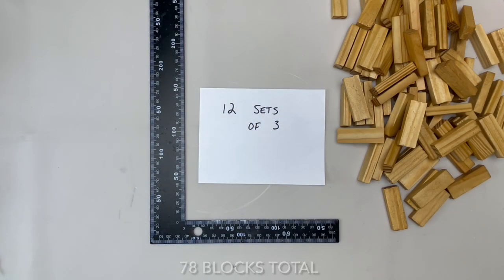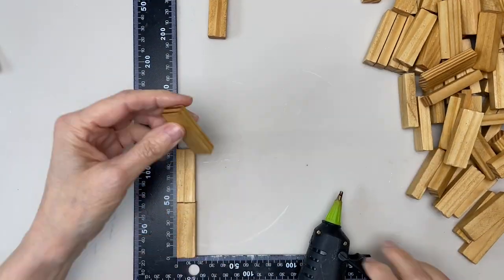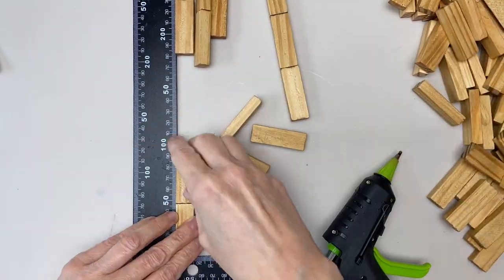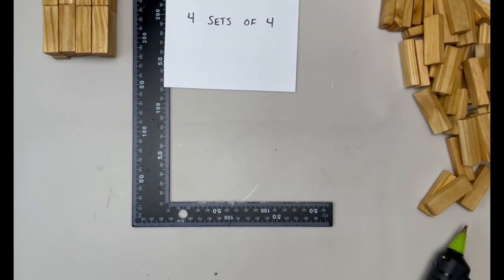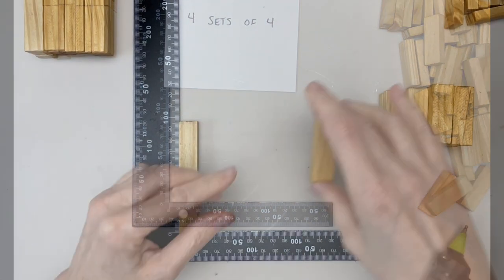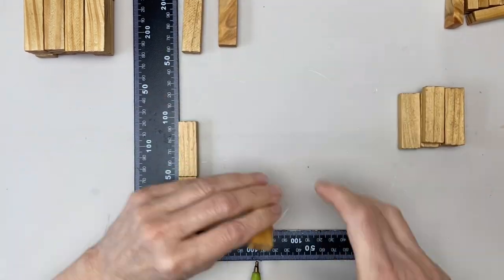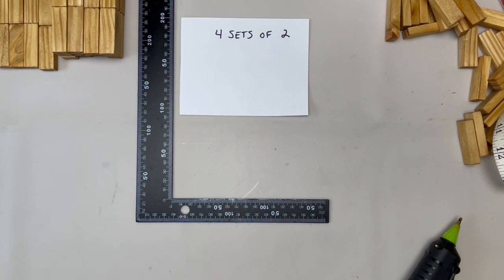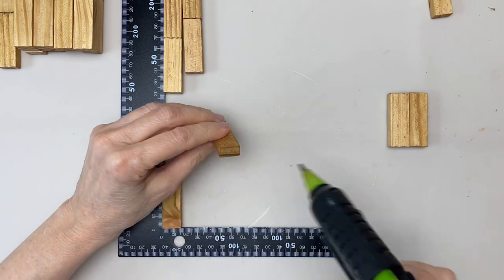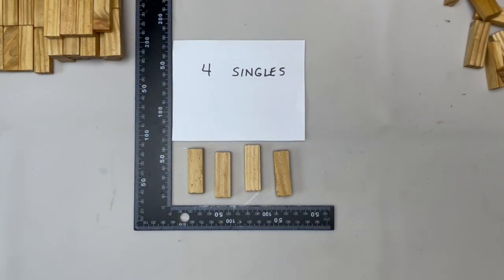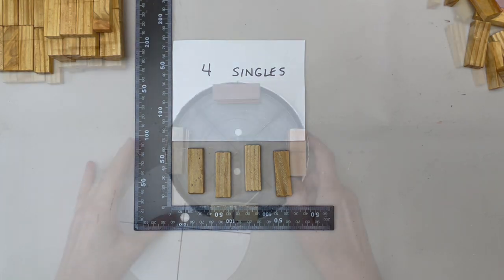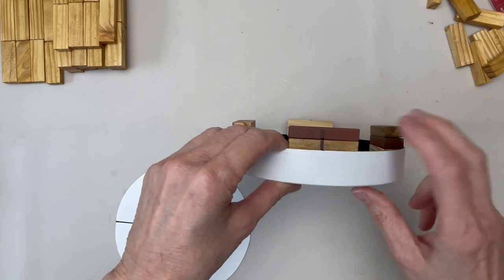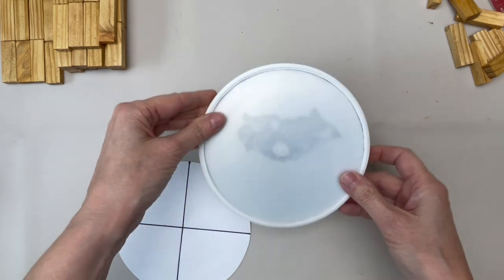I glued 12 sets of three tumbling tower blocks end to end, four sets of four tumbling tower blocks end to end, four sets of two tumbling tower blocks, and then I also used four single blocks. You may notice that the color is a little bit different. I used a very light oak stain on these blocks, but after I put this whole project together, I did not like it and I went back to the natural color.